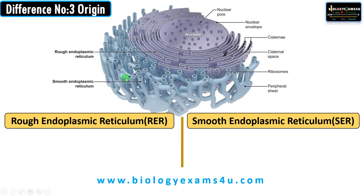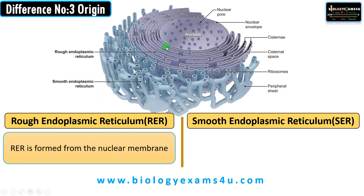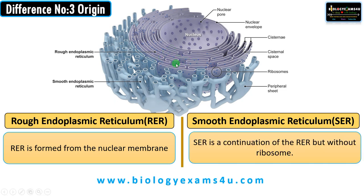Difference number three regarding the origin. RER is formed from the nuclear membrane and is in continuity with it, serving as a channel for transporting proteins. It is part of the endomembrane system, starting from the nuclear membrane, then moving to RER, then SER, Golgi apparatus, and finally passing materials to vesicles and out of the cell. SER is actually a continuation of RER but without ribosomes.